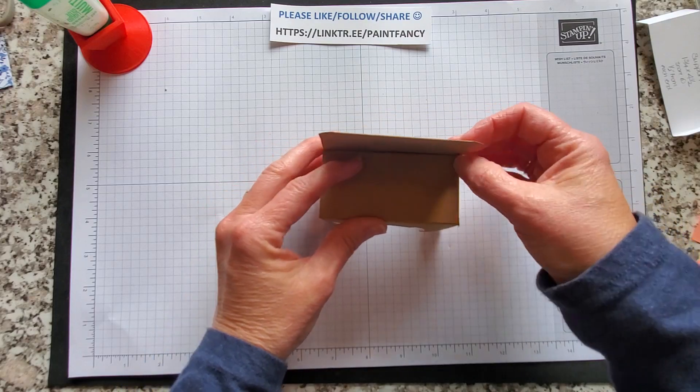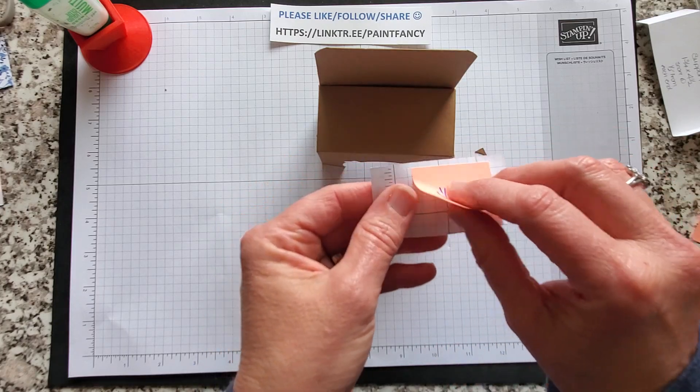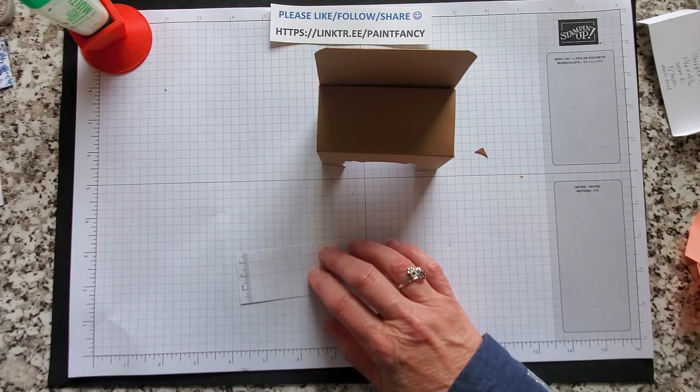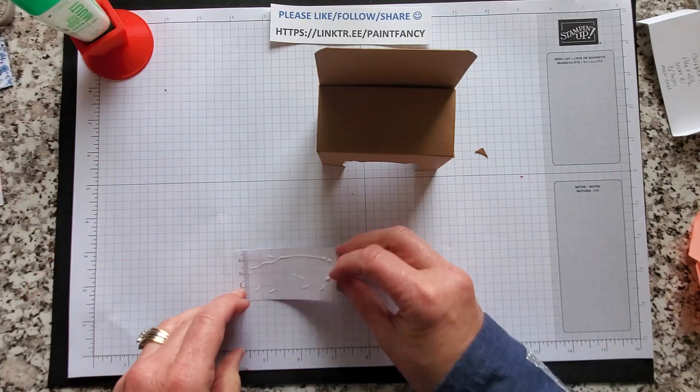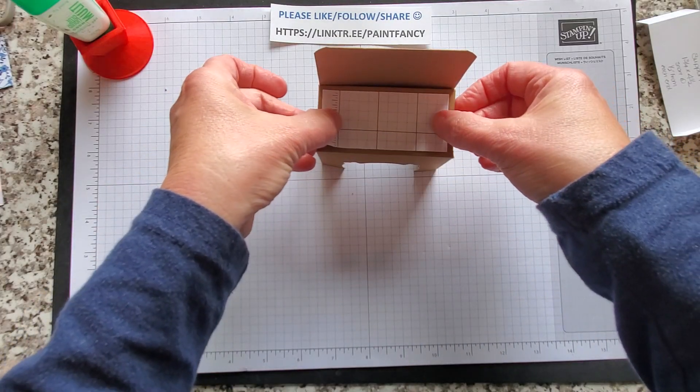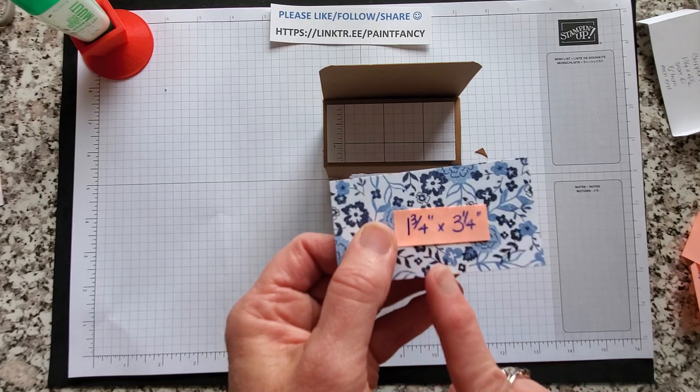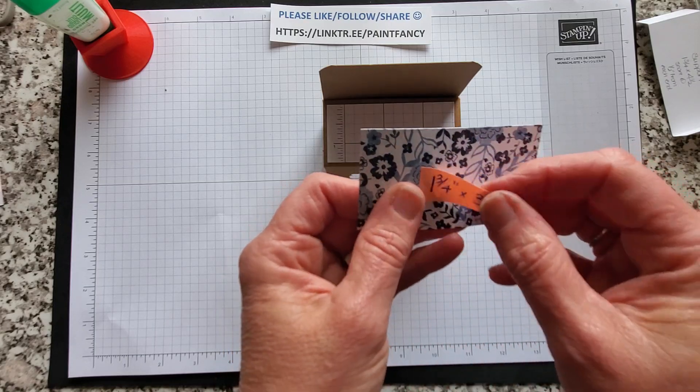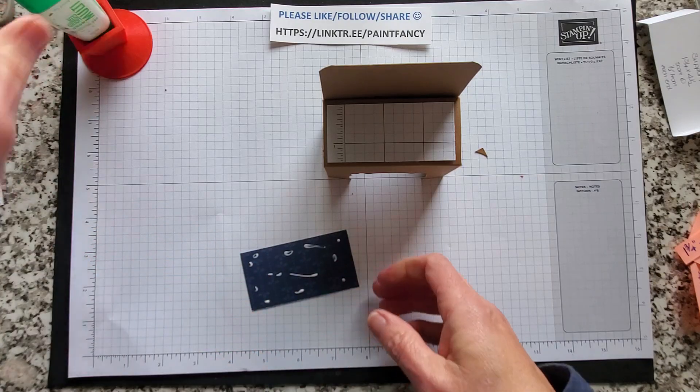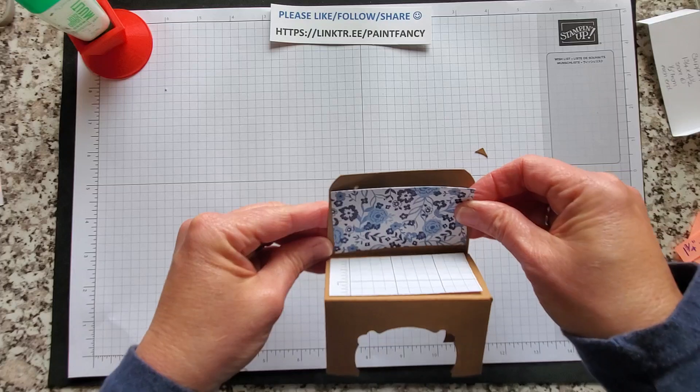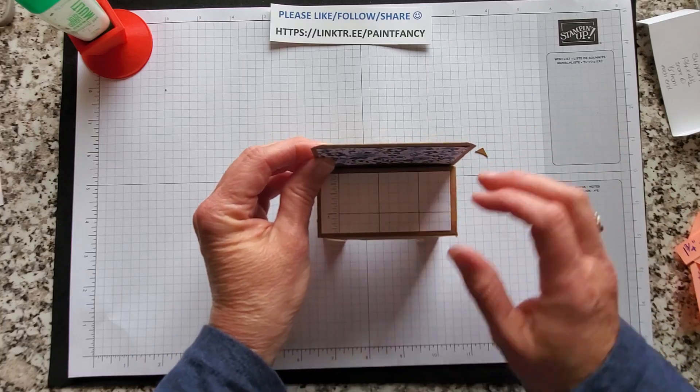So I started by adding a piece of our good old grid paper, one and a half by three and a quarter. And a piece of our countryside designer series paper, one and three quarters by three and a quarter.